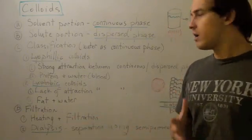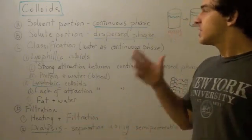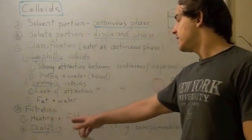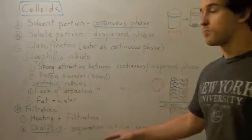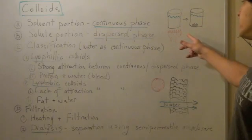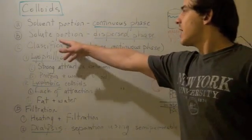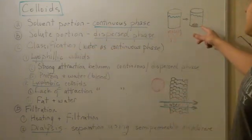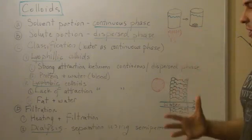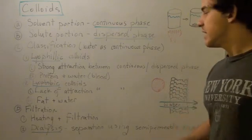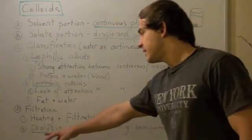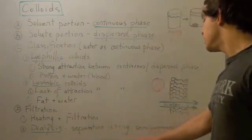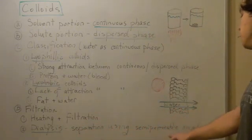There are two ways to filter colloids. The first way is by heating and then filtration. If you heat a colloid, this will cause the solute to coagulate, and then you can filter it by simple filtration. The second way is via dialysis, which is the separation using a semipermeable membrane.